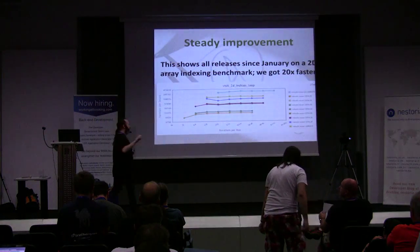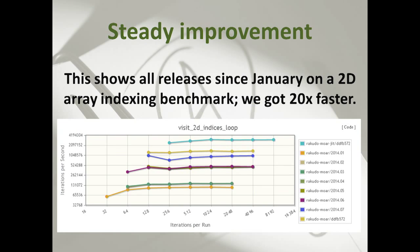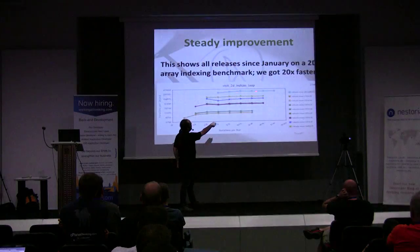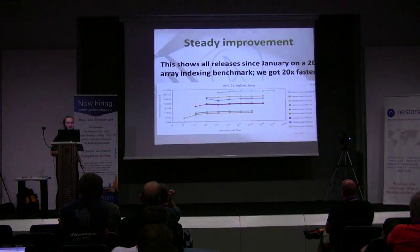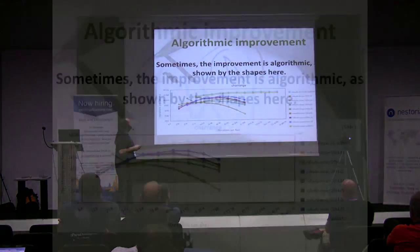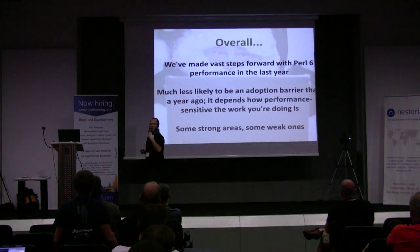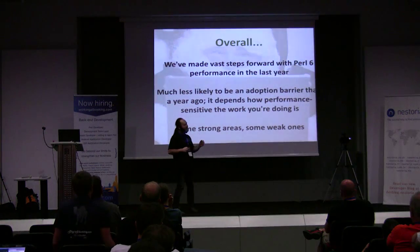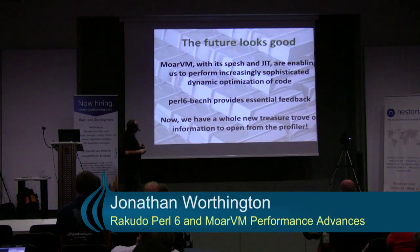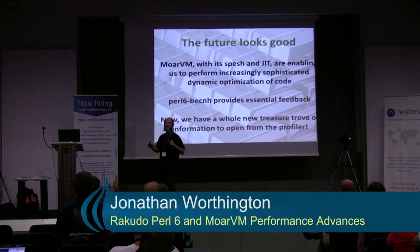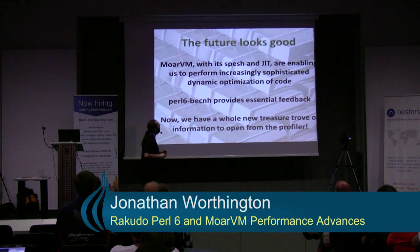Here's a final graph: from the January release through February, March, April, May, June, up to the one that went out yesterday — you can see we've steadily over the year been improving, and we have a lot of graphs that look like this. Overall we've made a lot of big steps. I think performance is much less likely to be an adoption barrier now than it was. We've got strong areas that are very promising — particularly the JIT-compiled native stuff. We've got some weak areas still, but the future looks pretty good, particularly now we've got the profiling tools — a new treasure chest of information we're going to mine for all we can.